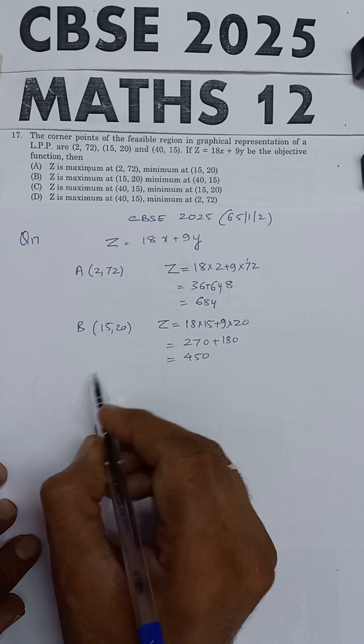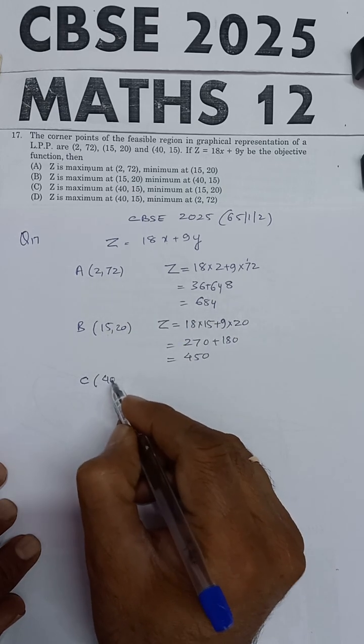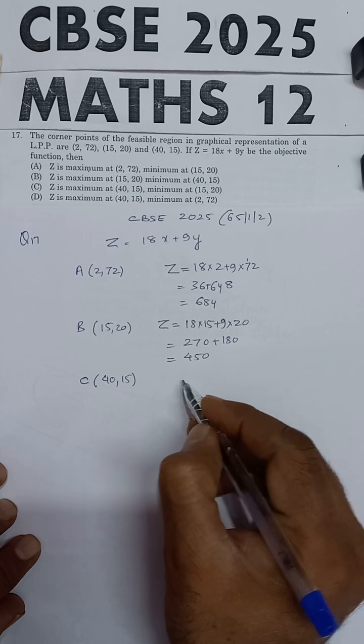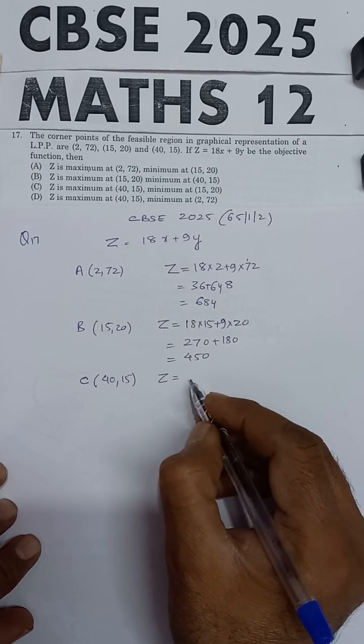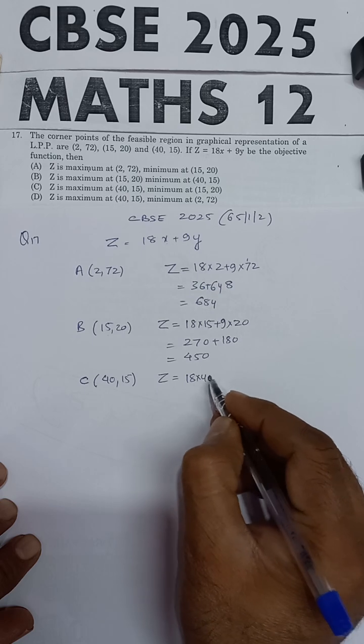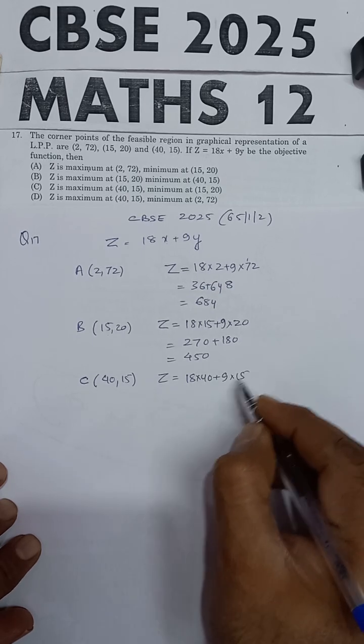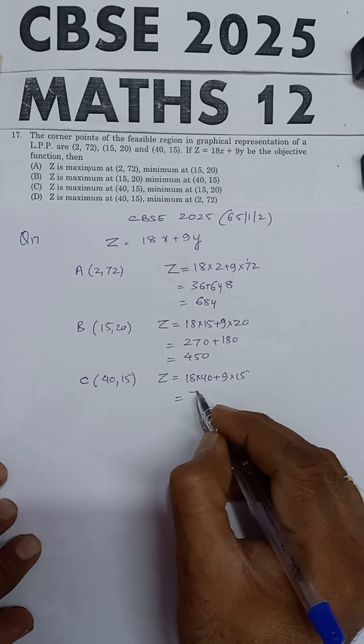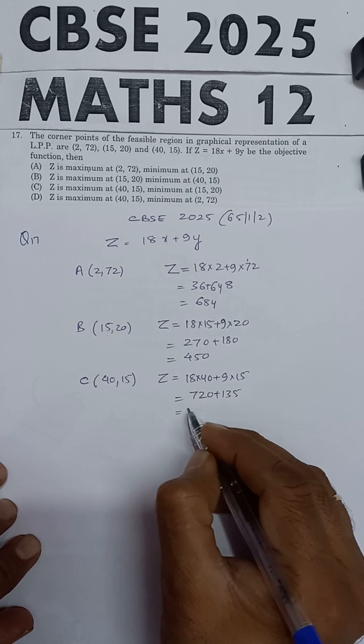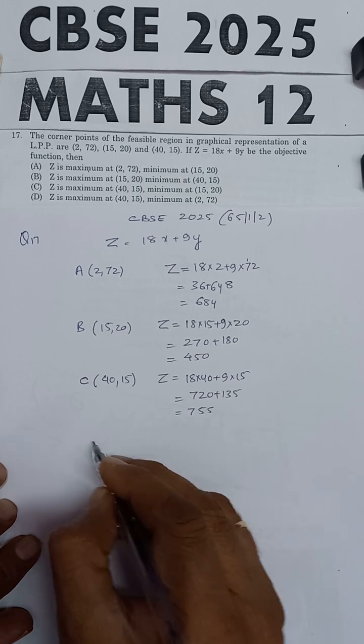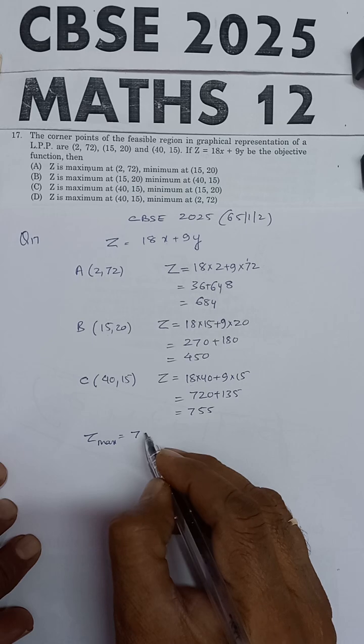The third point C is (40,15). At this point, z equals 18 times 40 plus 9 times 15, which is 720 plus 135, equals 755. So z is maximum with a value of 755 at the point (40,15).